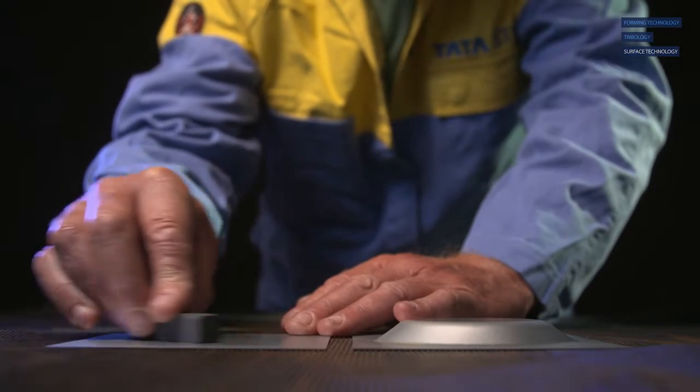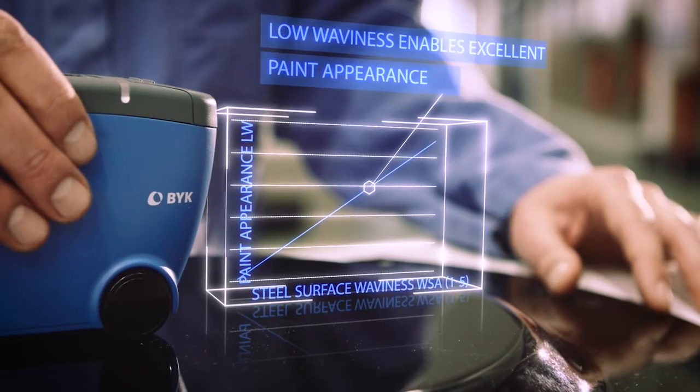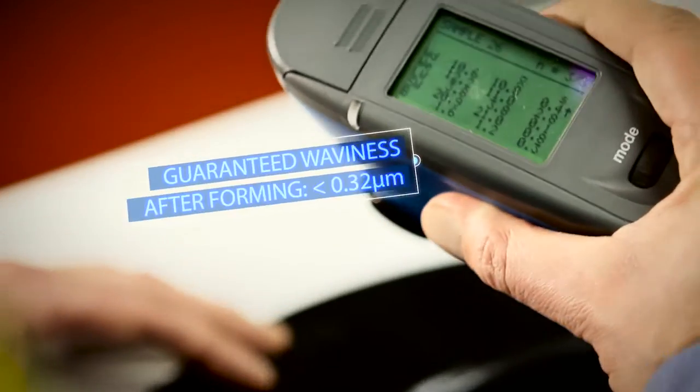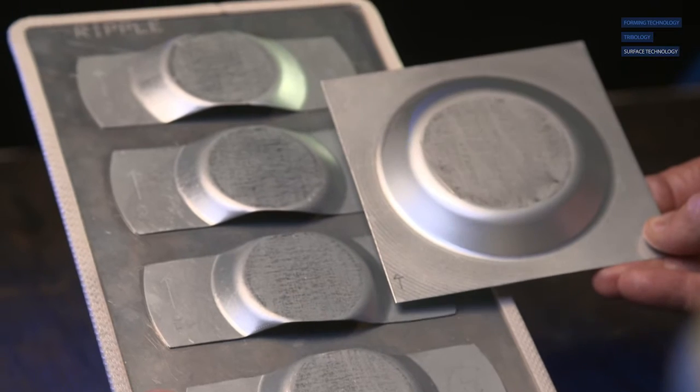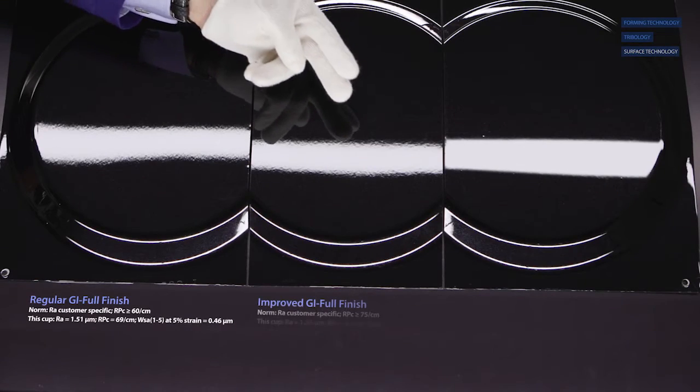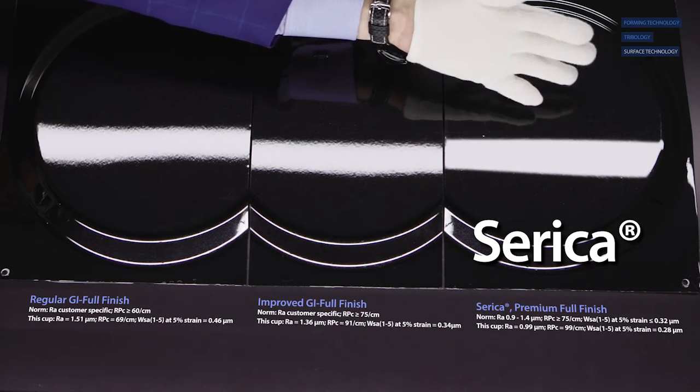To achieve excellent paint appearance on outer panels, surface topography is crucial. Our surface research proves that waviness after forming is the key parameter for specifying paint appearance. Paint shops need a guaranteed low waviness of the formed product. It means they need steels with optimized surface properties. That's why we developed Sirica to assure excellent paint appearance.